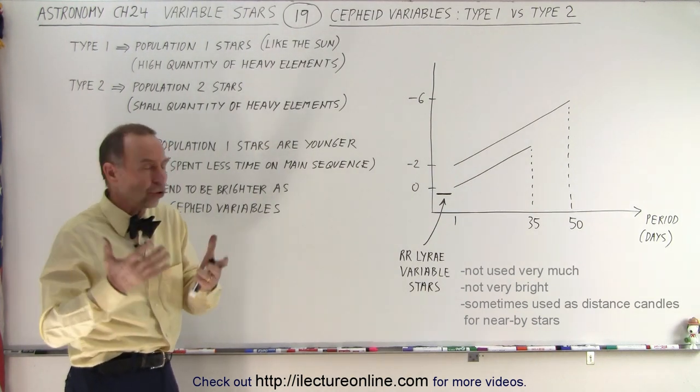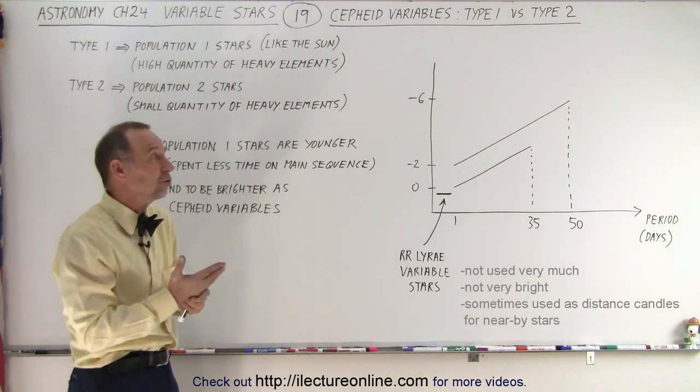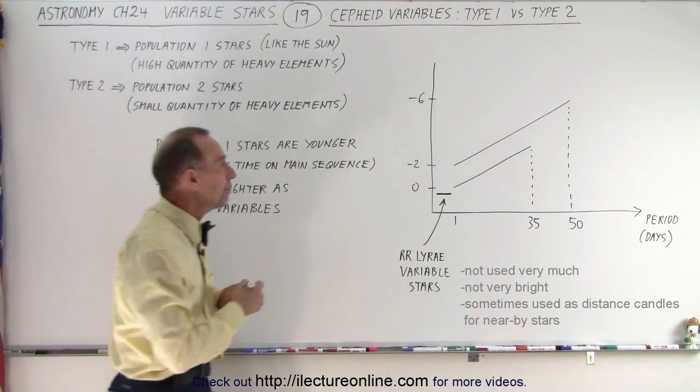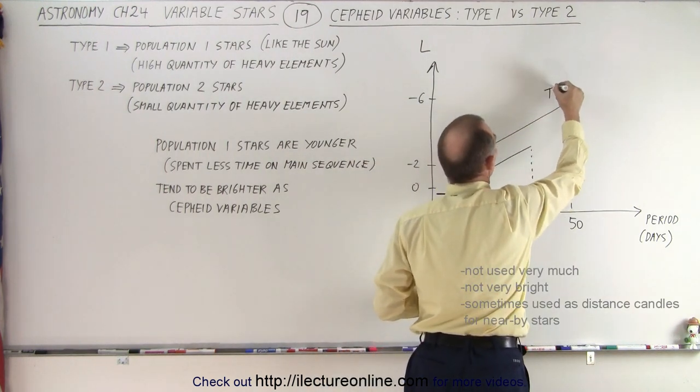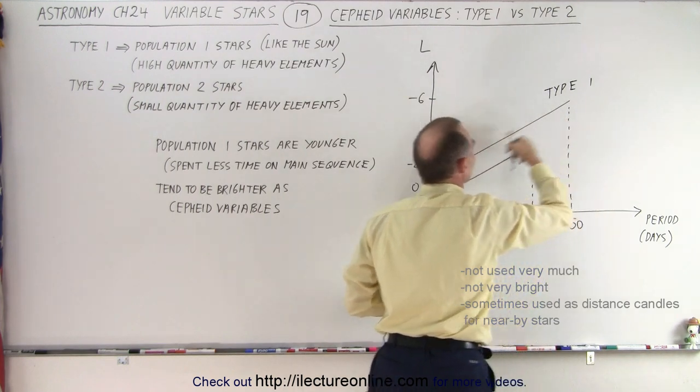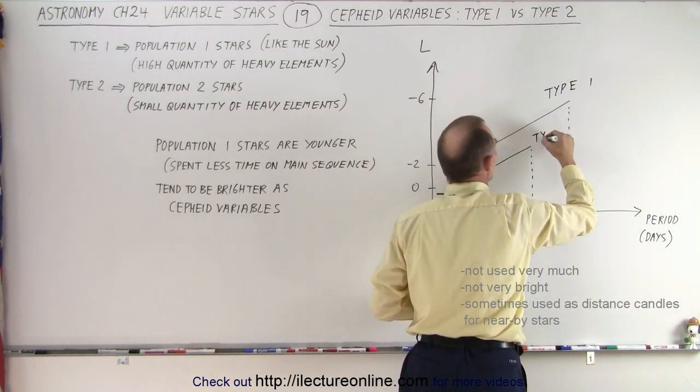So when we try to chart the period of these Type 1 versus Type 2 stars on the period versus luminosity diagram, and of course this is our luminosity, what we find is that the Type 1 Cepheid variables tend to be brighter than the Type 2 Cepheid variables.